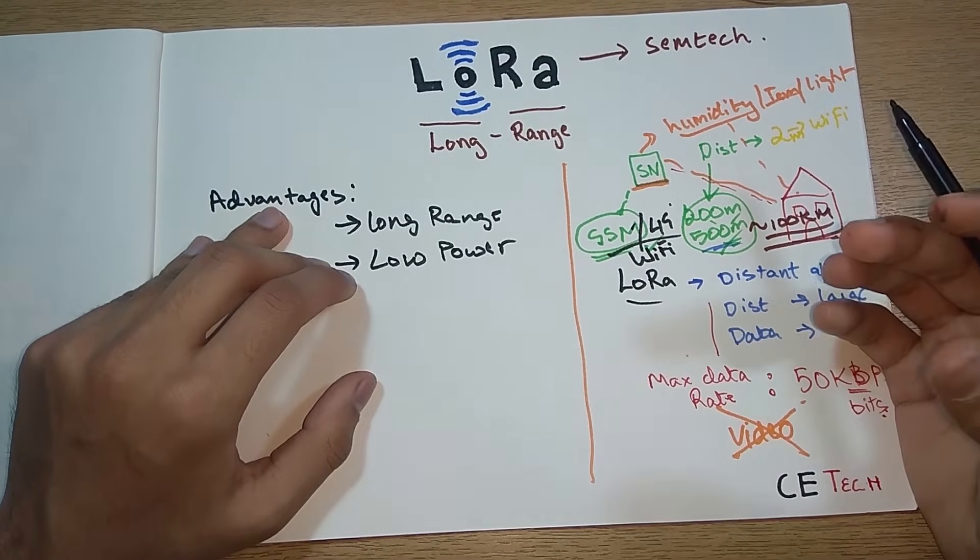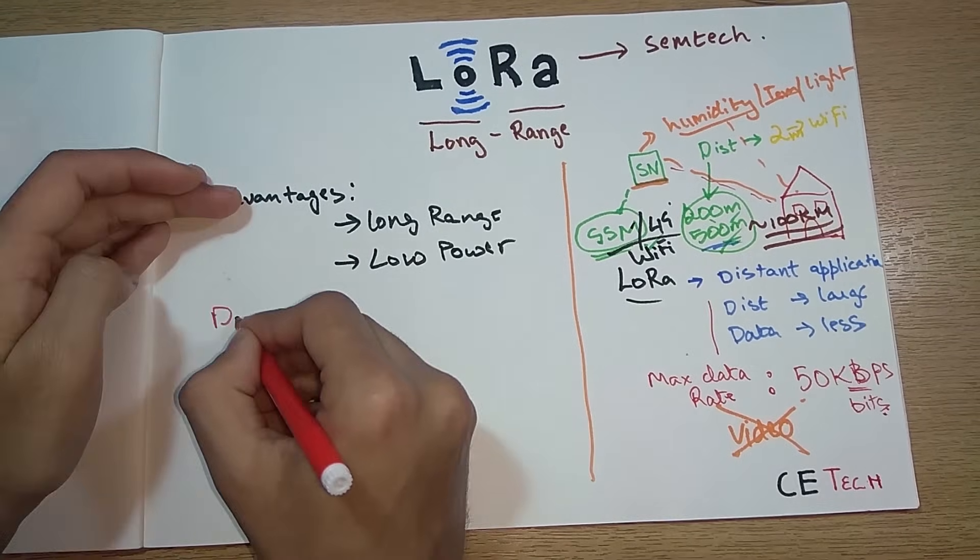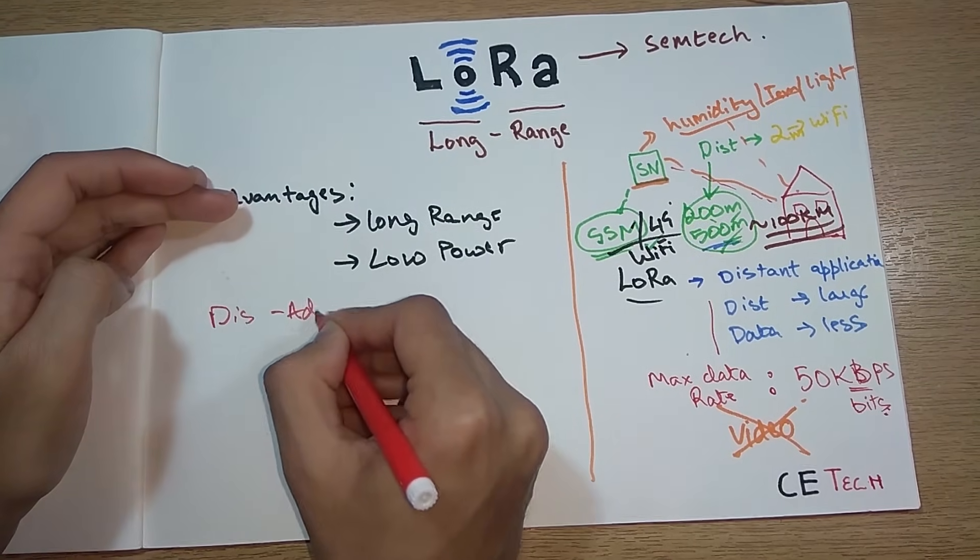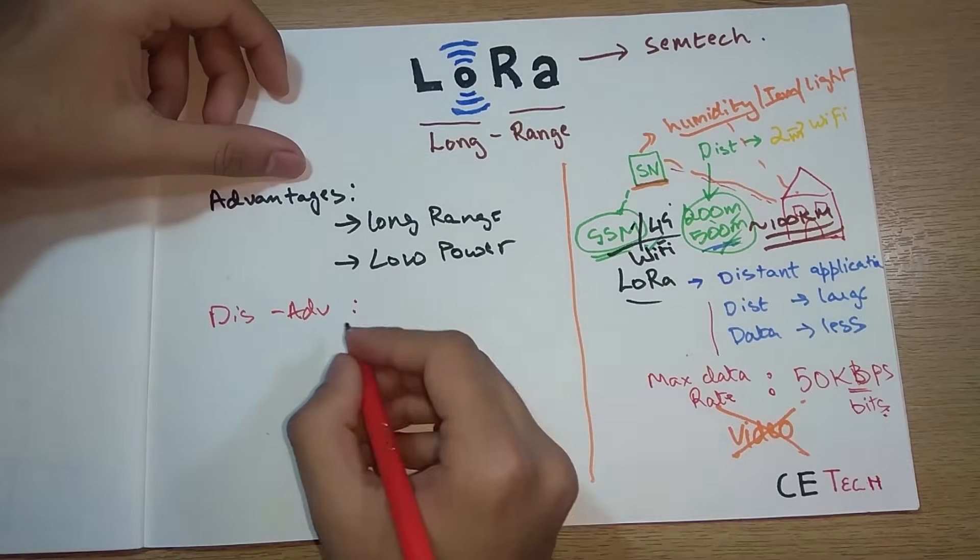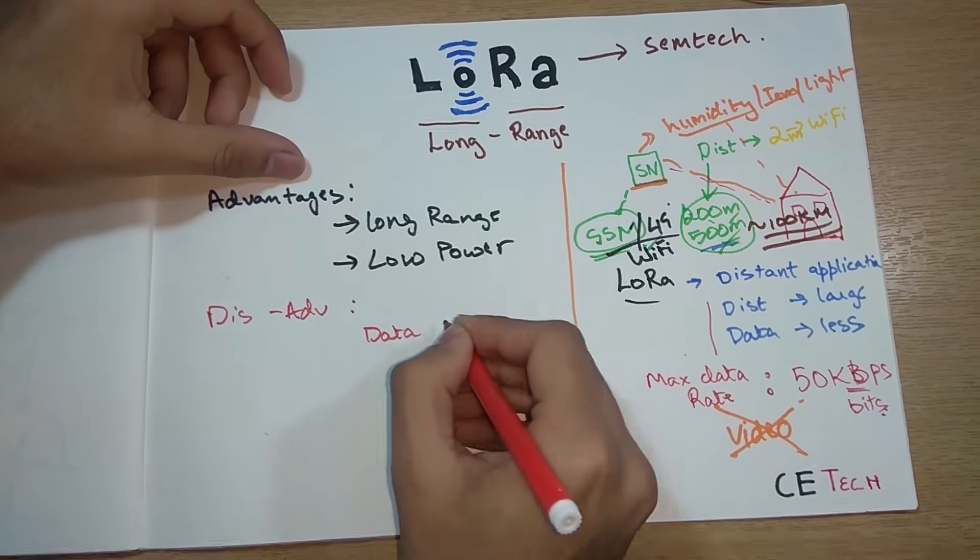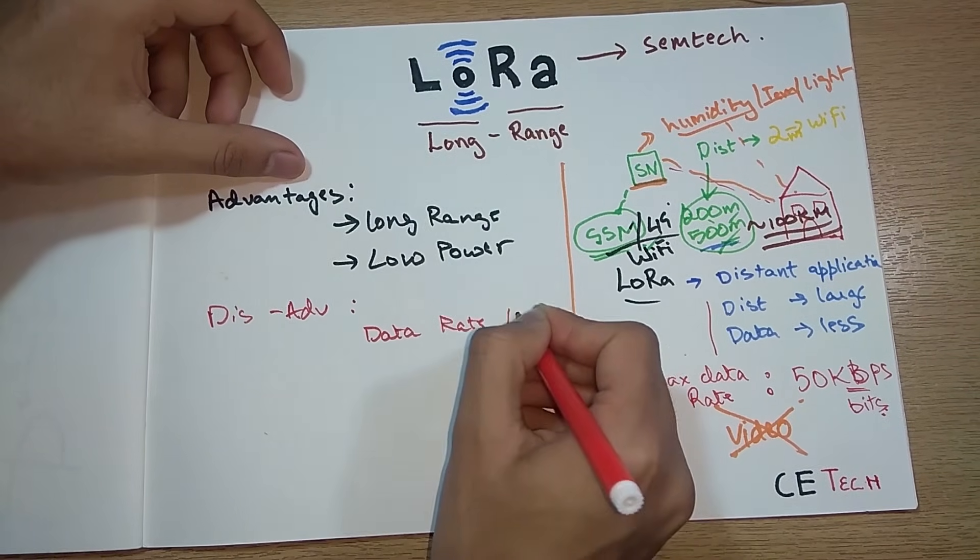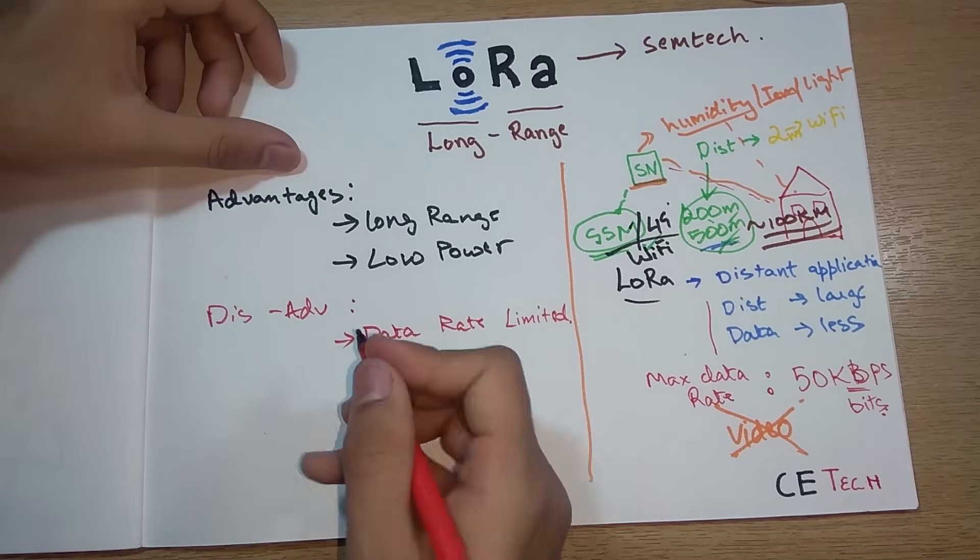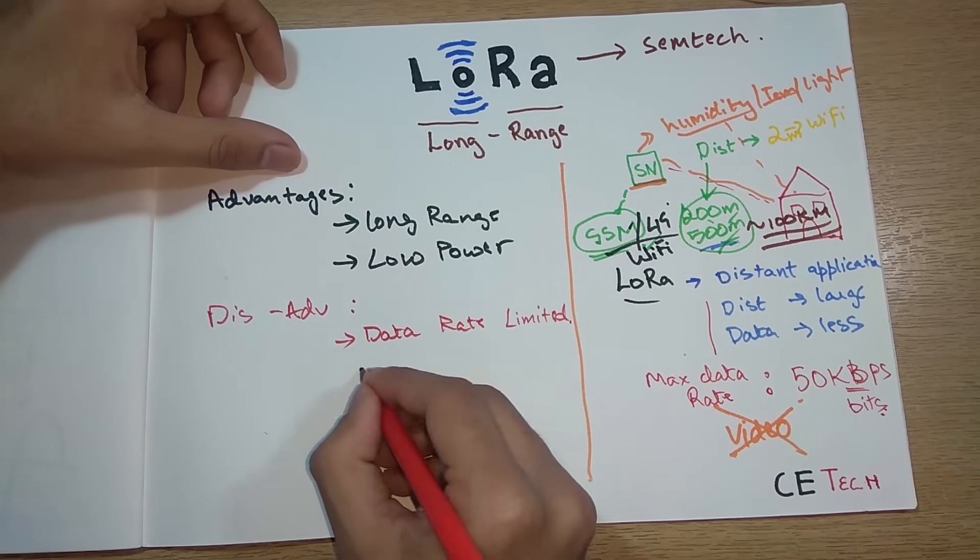LoRa consumes very little power, like 10 milliamps, 20 milliamps max while transmitting or receiving in certain modes. The disadvantage for LoRa is that the data rate is limited, so the bandwidth is also limited.